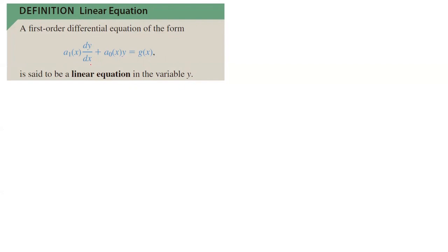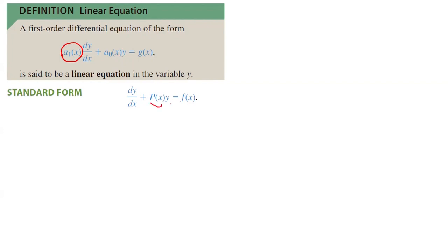The free variable is x. You need to write this in standard form. Assuming a1(x) is not zero, you divide everything by a1(x), and you get dy/dx plus a_0(x) over a1(x) — now represented by p(x) — times y equals g(x) divided by a1(x), which is represented by f(x).